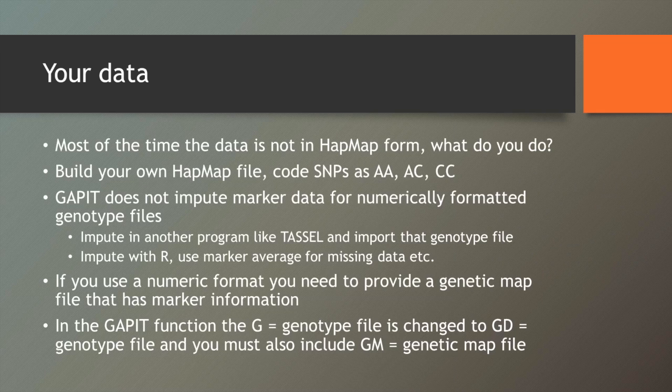So when it comes to analyzing your data, most of you probably don't have data in HapMap format, so what do you do? You can build your own HapMap file. If you have the genetic map and you have your genotype data, you can arbitrarily code your data as AA, AC, or CC to represent the different allelic states of your data, the SNP calls. That's one way to do it.